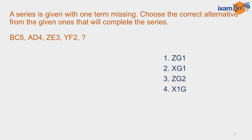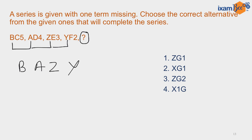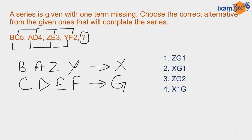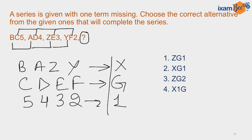An alphanumeric series is given and you have to find the missing term. There are 3 series to look at. The first letters are in reverse alphabetical order: B, A, Z, Y — so Y must be followed by X. The second elements are in forward alphabetical order: C, D, E, F — so F is followed by G. The third element is a descending number series: 5, 4, 3, 2 — followed by 1. So the desired answer is X, G, 1, and option number 2 is correct.